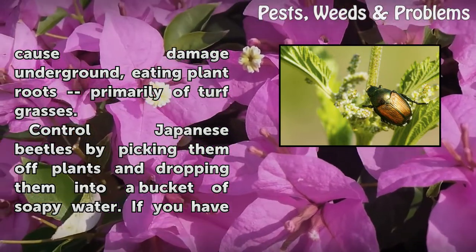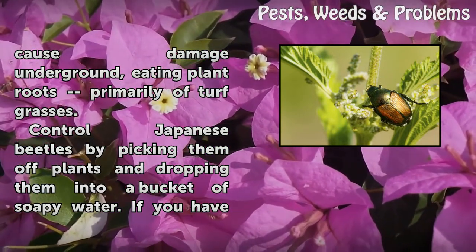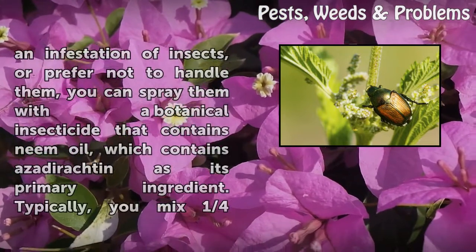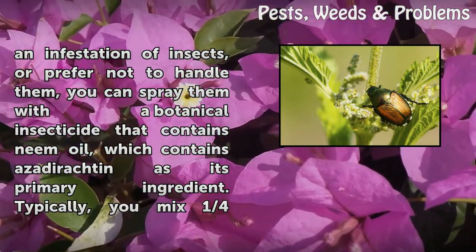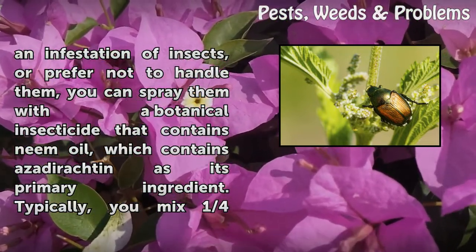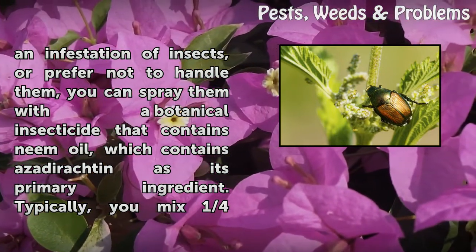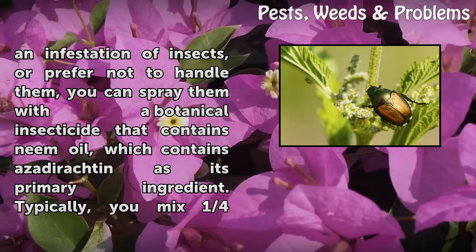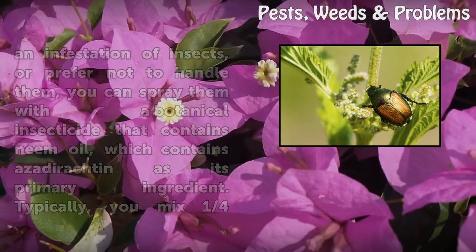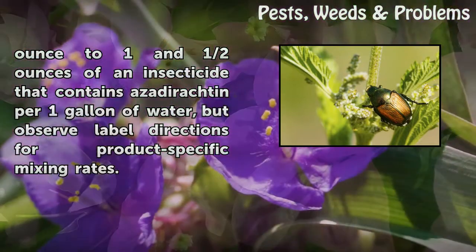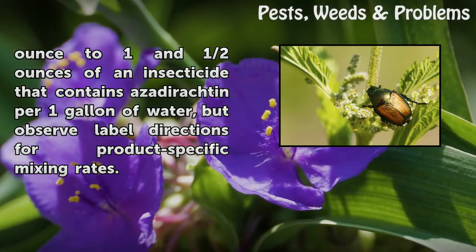Control Japanese beetles by picking them off plants and dropping them into a bucket of soapy water. If you have an infestation or prefer not to handle them, you can spray them with a botanical insecticide that contains neem oil, which contains azadirachtin as its primary ingredient. Typically you mix one-quarter ounce to one-and-a-half ounces of an insecticide containing azadirachtin per one gallon of water, but observe label directions for product-specific mixing rates.